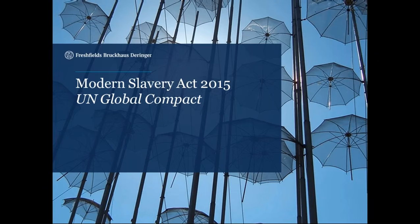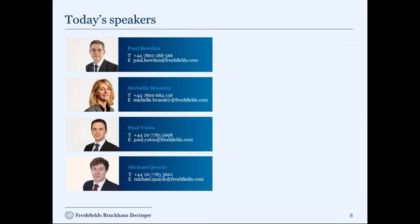Thank you very much, Shubha. Thanks to the UN Global Compact for organizing the event. We're here today to talk about the UK's Modern Slavery Act, a statute of 2015 — I'll call it the MSA. We're going to look at what it is, what it means for global businesses, particularly those based outside the United Kingdom, and what those businesses should be doing to comply. Our team also has expertise in anti-bribery and corruption, which is relevant because there's going to be a read-across from the anti-bribery and corruption compliance space to how one can best deal with compliance in relation to the Modern Slavery Act.